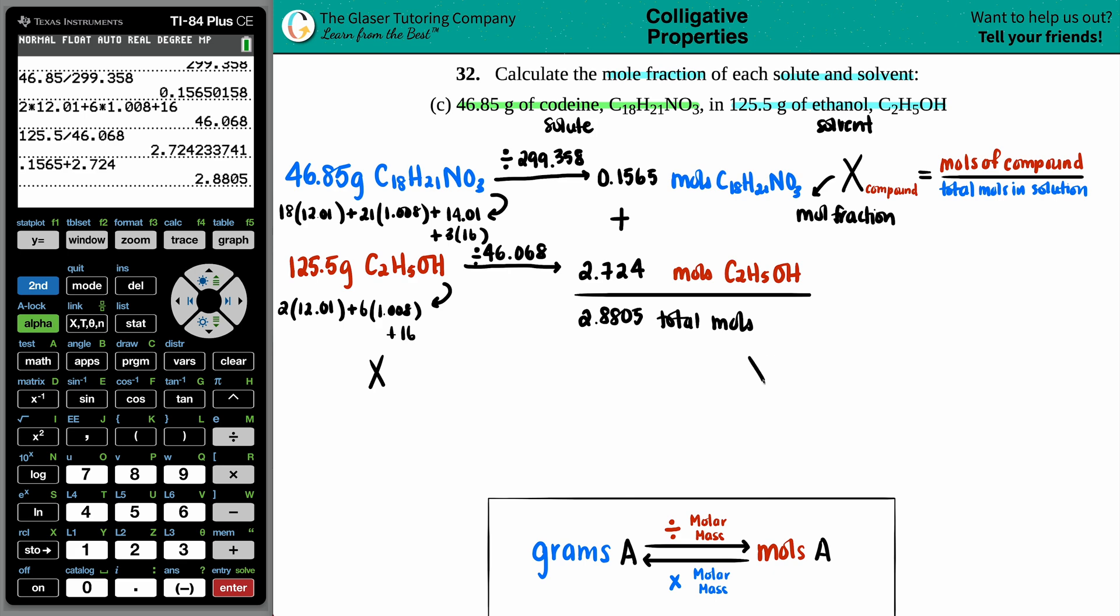So now we can start setting up our mole fractions, which is equal to a fraction. I guess we'll do the blues first, so this is codeine. Codeine's moles of the compound was 0.1565 divided by the total moles which was 2.8805.